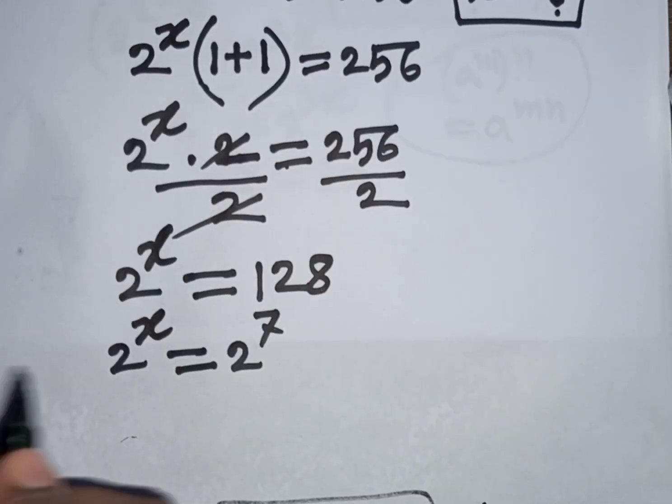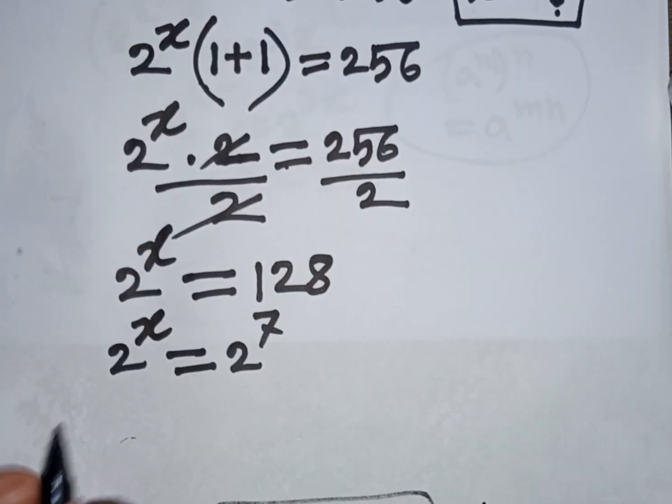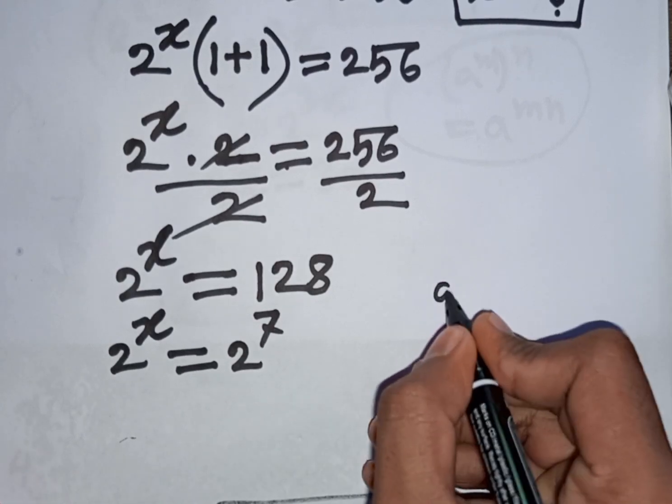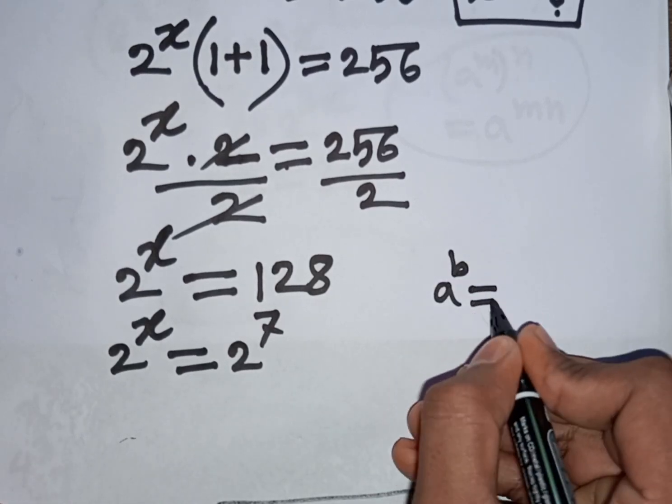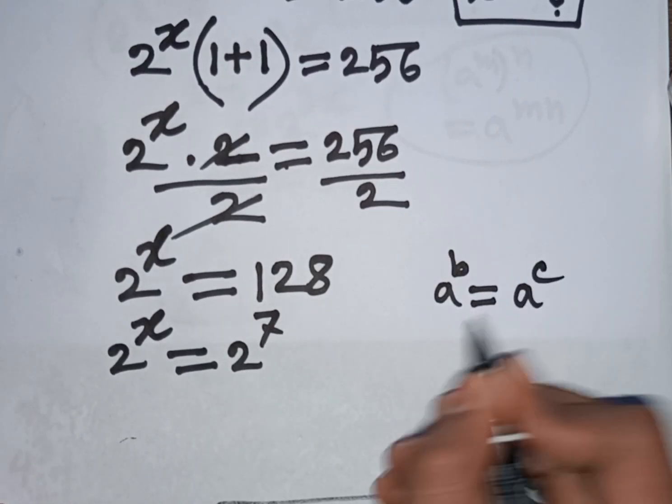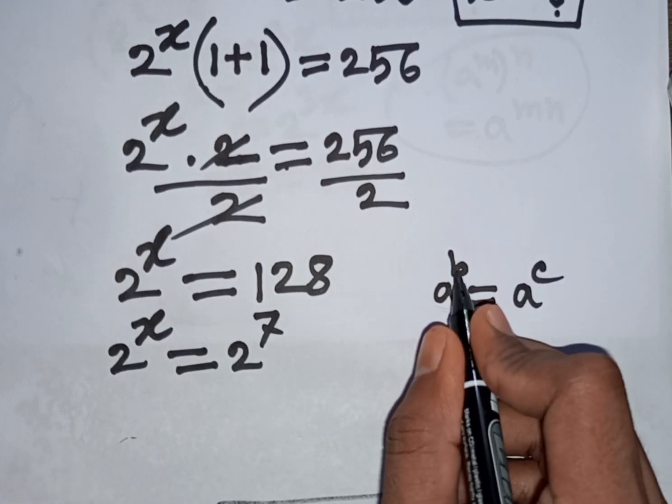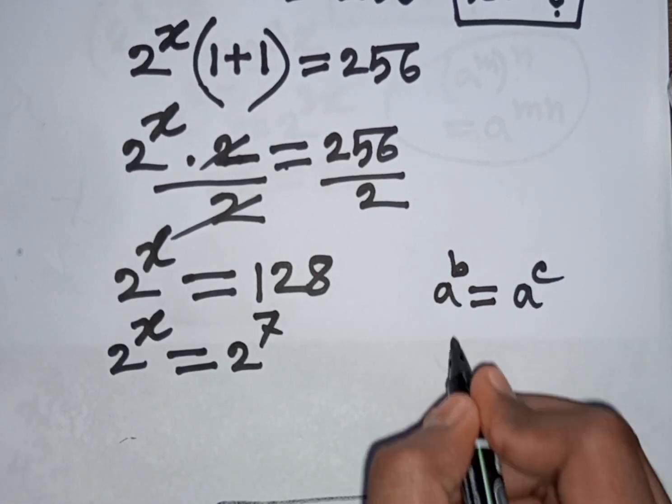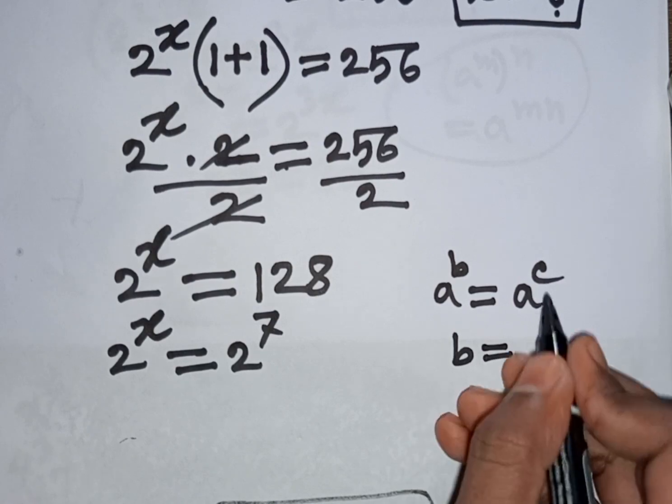Now we see 2, 2, same base. So remember that a power b is equal to a power c. So, a same base, a will be cancelled, power is equal to power, that means b will be equal to c.